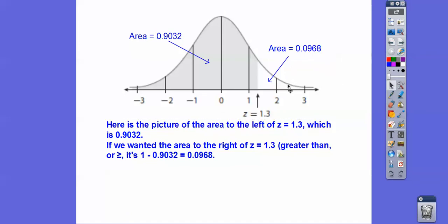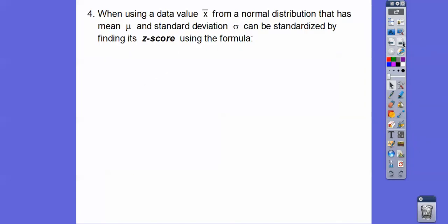Now remember what we saw when we were looking at negative 1.3? Well, that's the same over here. The area to the left is 0.0968 because it's symmetrical. This area right here is going to be the same as this area on this side.